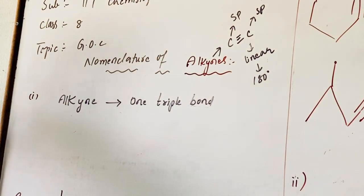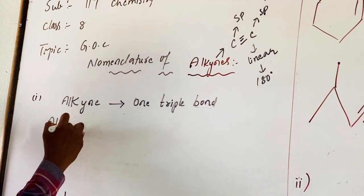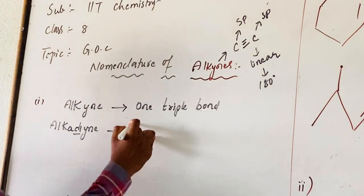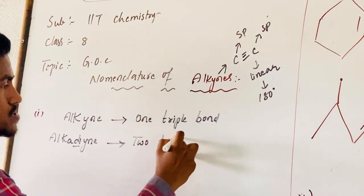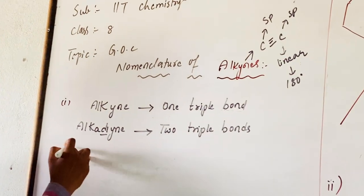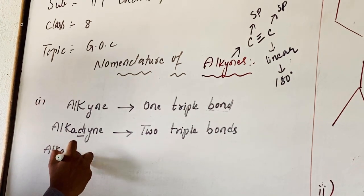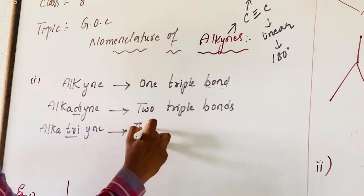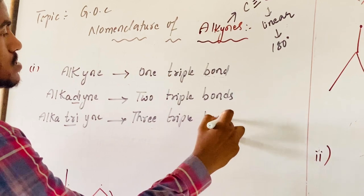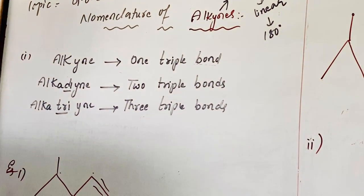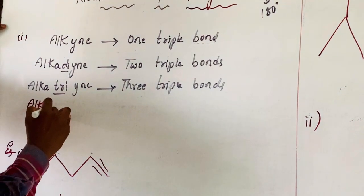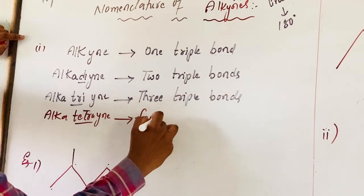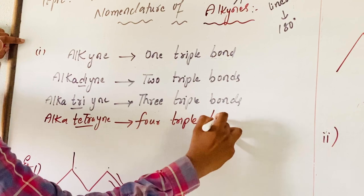If the parent name is given as alkadiyne, the 'di' represents a numerical prefix — nothing but it contains two triple bonds. In the same way, if the parent name is alkatriyne, 'tri' represents a numerical prefix for three triple bonds. Similarly, alkatetrayne — 'tetra' represents four — means it contains four triple bonds.